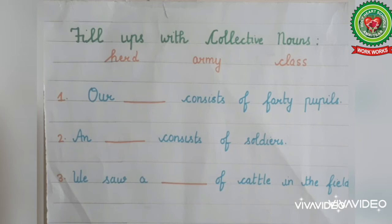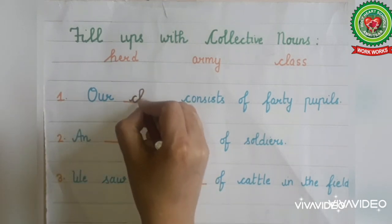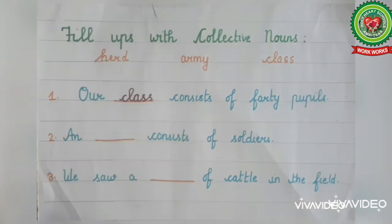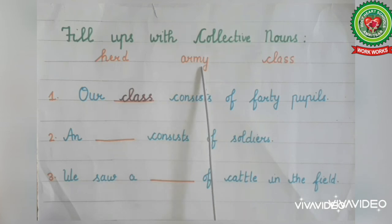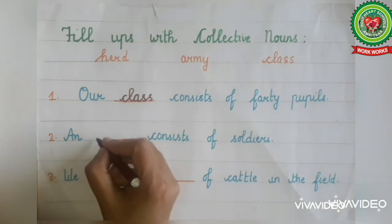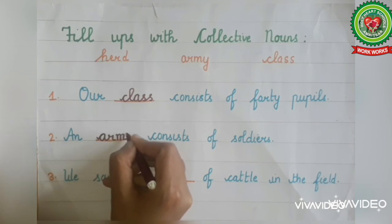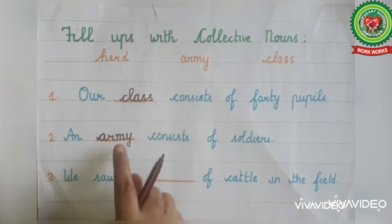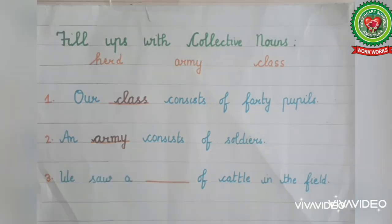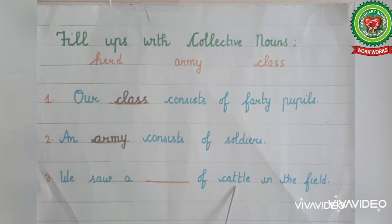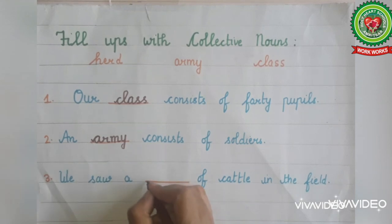Number two: an army consists of soldiers. You know army is a word that stands for the collection of soldiers, so we will write army here as a collective noun. Number three: we saw a dash of cattle in the field. You know herd is a word that stands for the collection of cattle, so we will write herd as a collective noun in this sentence.